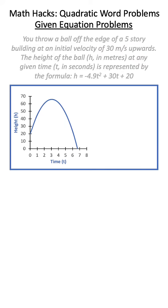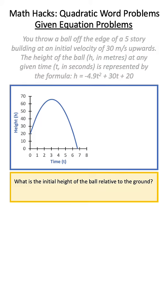We can be asked a variety of things in questions like this, such as what is the initial height of the ball relative to the ground? This can be solved by solving for the y-intercept by setting x equal to 0.